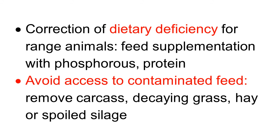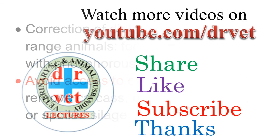Avoid animal access to contaminated feed. Botulism can be due to carcasses, decaying grass, hay, or spoiled silage. Immediately remove such material so that animals do not have access to contaminated food.